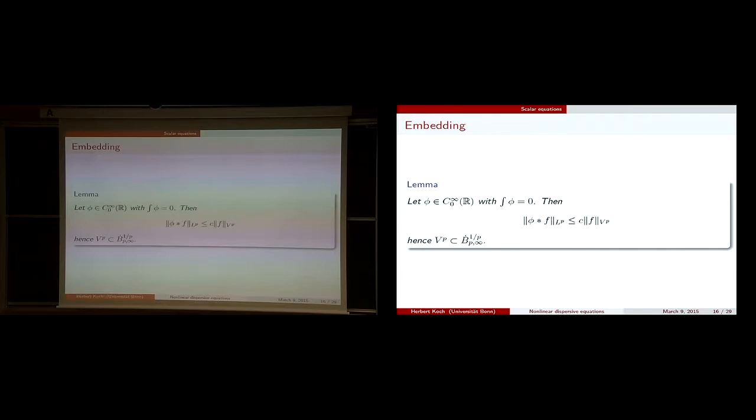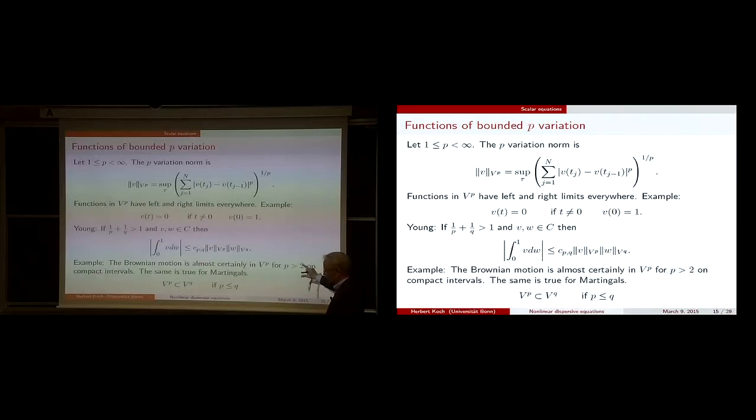This V^p — the bounded p-variation — was the starting point for Terry Lyons in order to get his rough path theory, together with this Young integral. Brownian motion is in V^p for p larger than 2. Obviously he needed some other non-trivial ingredients, but nevertheless this was the starting point.